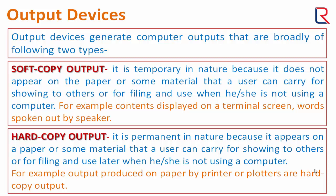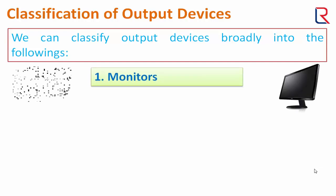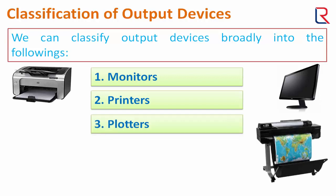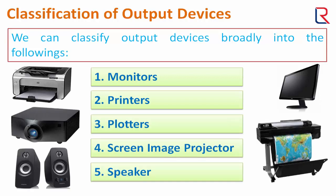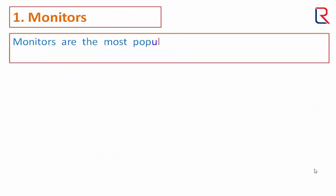Now see the classification of output devices. We can classify output devices broadly into the following: monitors, printers, plotters, screen image projector, and speakers. Now let's have a look at each one.